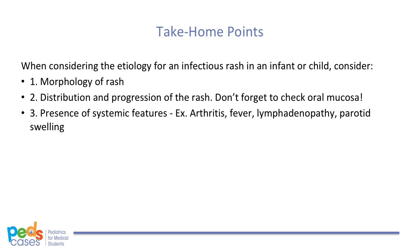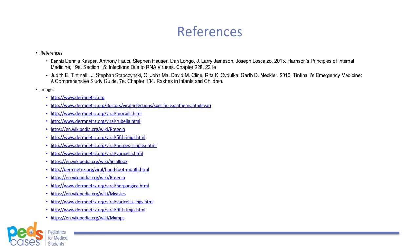Overall, when considering the etiology for an infectious rash in an infant or child, consider: number one, the morphology of the rash; two, the distribution and progression of the rash — remember to check oral mucosa; and three, presence of systemic features such as arthritis, fever, lymphadenopathy, or parotid swelling. We have discussed the clinical diagnosis commonly made for viral rashes and have reviewed that viral rash treatment is symptomatic in the majority of cases. This concludes our Peds Cases podcast on viral rashes. Thank you.